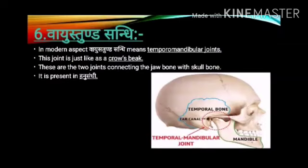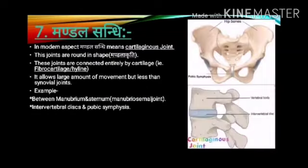Vistunda Sandhi: In the modern aspect, Vistunda Sandhi means temporomandibular joints. These joints are just like a crow's beak. These are the two joints connecting the jaw with the skull bone. It is present in the Hanusandhi.